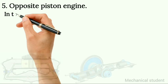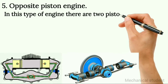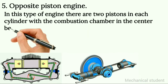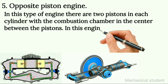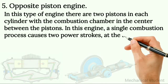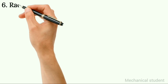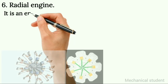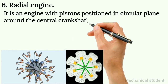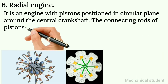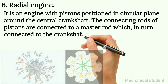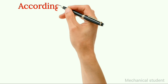5. Opposite piston engine: in this type of engine there are two pistons in each cylinder with the combustion chamber in the center between the pistons. A single combustion process causes two power strokes at the same time. 6. Radial engine: an engine with pistons positioned in a circular plane around the central crankshaft. The connecting rods of the pistons are connected to a master rod, which in turn is connected to the crankshaft.